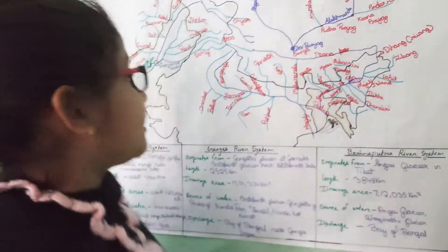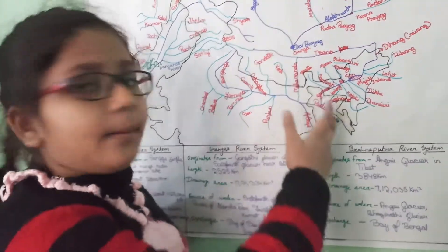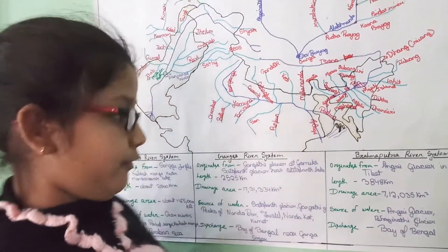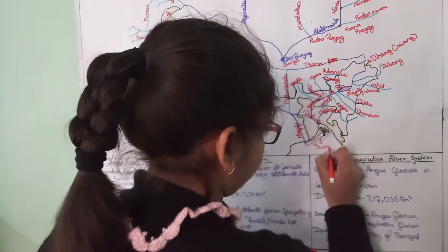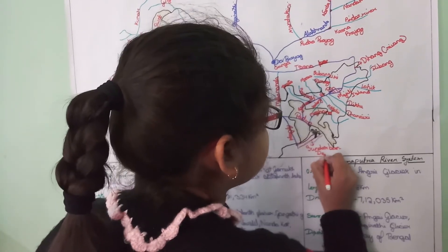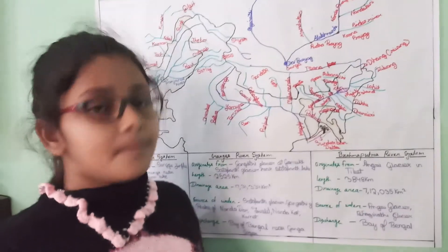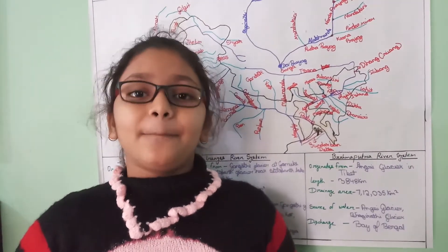The Ganga river and the Brahmaputra river both join together in the Bangladesh plains and form the world's largest delta, which is the Sundarban delta. So now we have completed the Brahmaputra river system and our whole Indo-Gangetic plains. If you like my effort, please subscribe, share, like and comment.